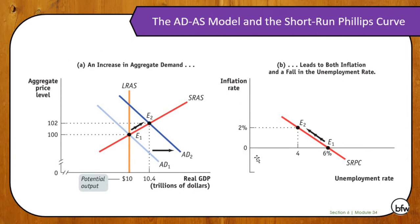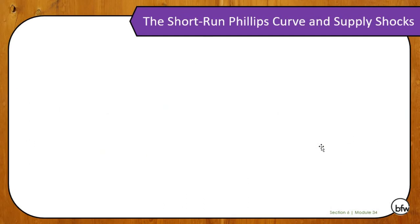The aggregate demand and aggregate supply model is directly linked to the short run Phillips curve — it is imperative that you understand that. If there is an increase in aggregate demand due to an increase in government purchases, that is going to increase real GDP; unemployment is going to drop and the price level is going to increase, causing inflation to go up. The opposite is also true: if aggregate demand shifts to the left, price level drops, meaning inflation drops but unemployment increases.